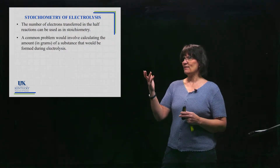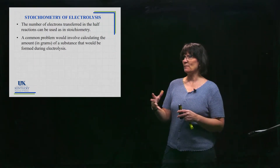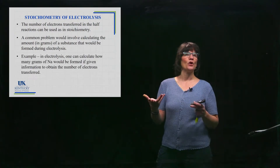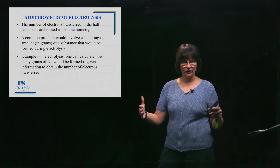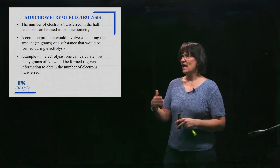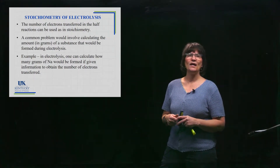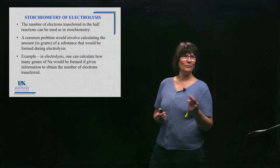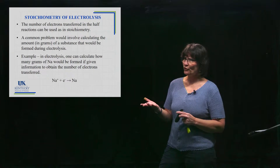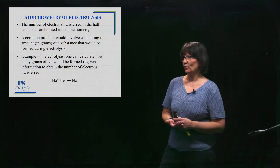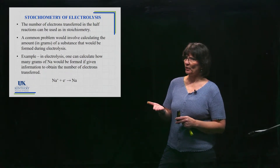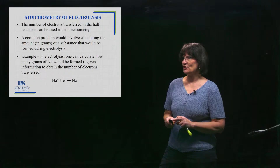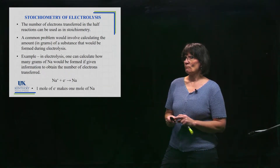A common problem asks you to calculate the amount in grams of something generated at one of the electrodes. For example, how many grams of sodium is going to be formed if you transfer a certain number of electrons through a system — like molten sodium chloride in electrolysis. The half reaction gives us a relationship between moles of electrons and moles of sodium: every time one mole of electrons is pumped in, you get one mole of sodium out.